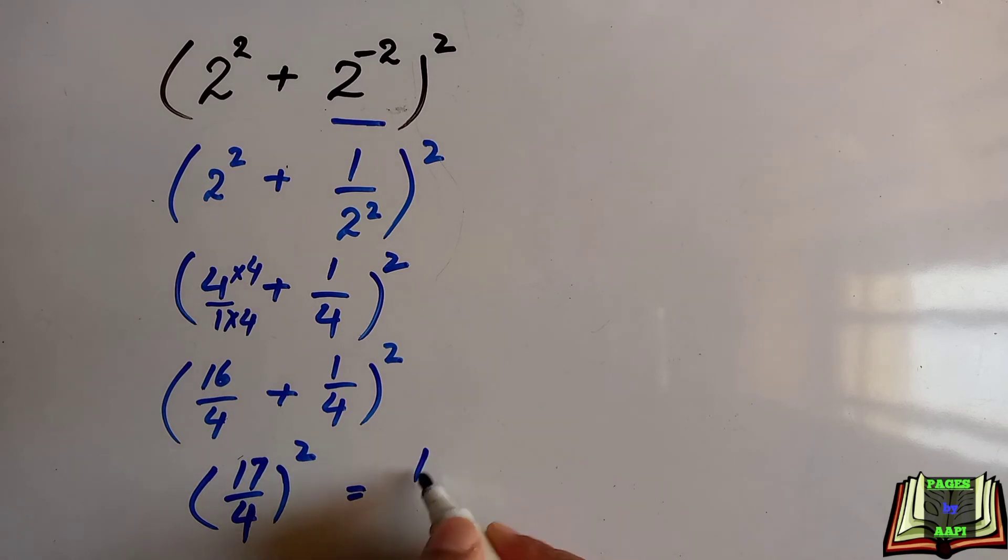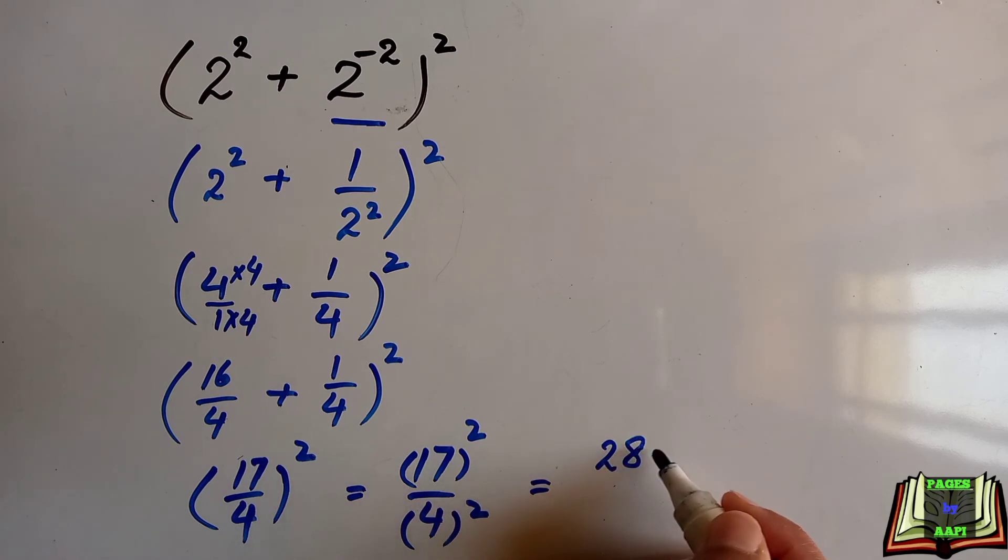This can be written as 17 squared over 4 squared, which equals 17 squared is 289, and 4 squared is 16.